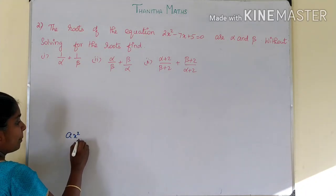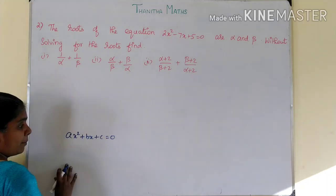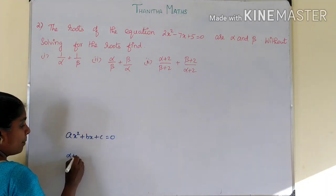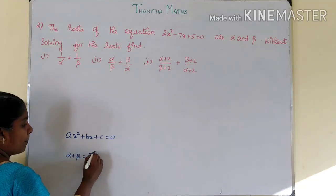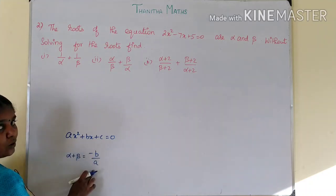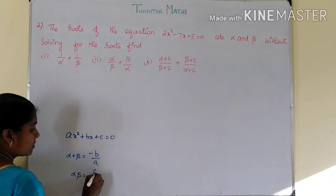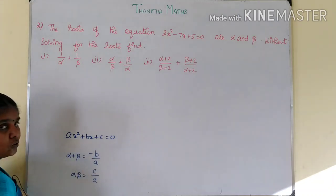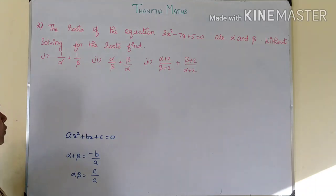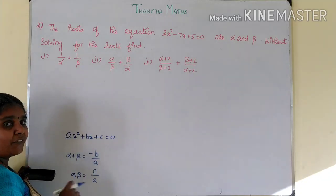The quadratic equation formula is ax² + bx + c = 0. The sum of the roots, alpha plus beta, equals minus b by a — that is, minus the coefficient of x divided by the coefficient of x². The product of the roots, alpha times beta, equals c by a, the constant divided by the coefficient of x². We will express all terms in this alpha plus beta and alpha beta format.